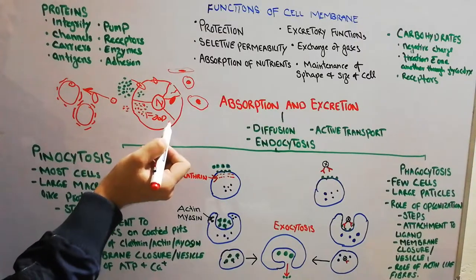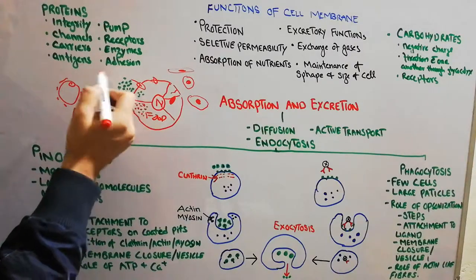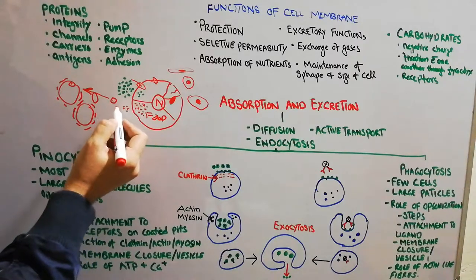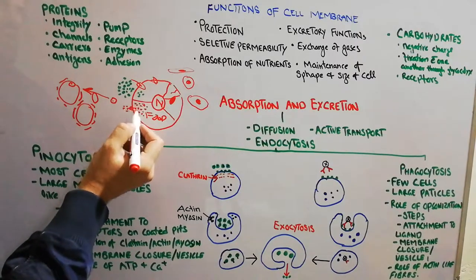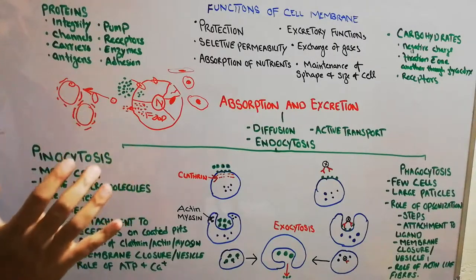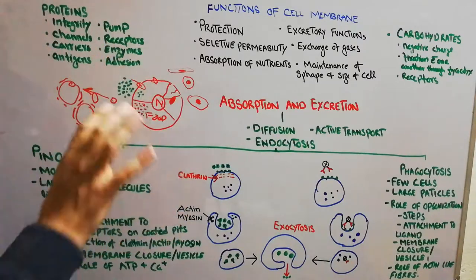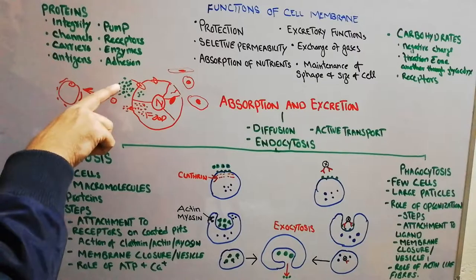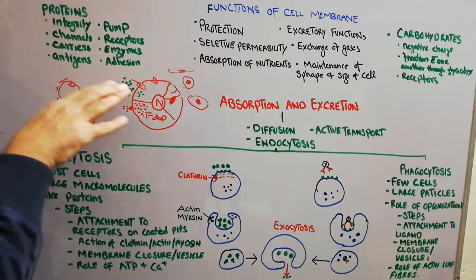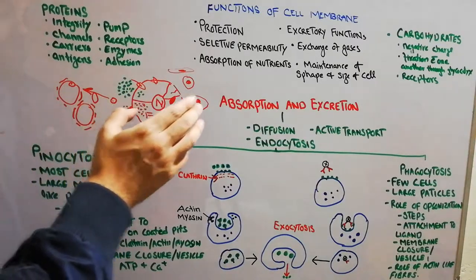Potassium is one substance present in abundance inside the cell, while sodium is present in abundance outside the cell. For example, potassium may go out from the cell directly by diffusion. Substances present outside in greater concentration will just passively, without active involvement or utilization of energy, move across the membrane.